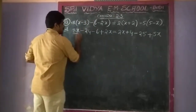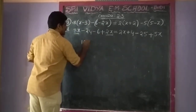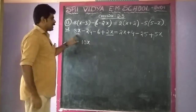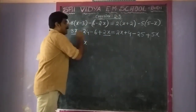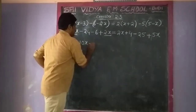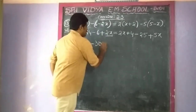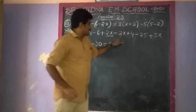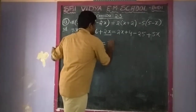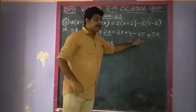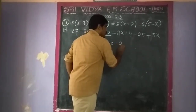Simplify the like terms: 8x plus 2x equals 10x. And minus 24 minus 6 — both are minus — gives minus 30. Is equal to 2x plus 5x gives 7x. And plus 4 minus 25 gives minus 21.